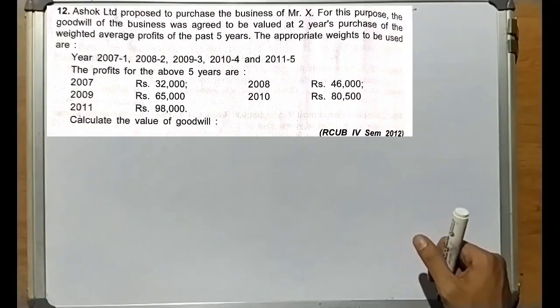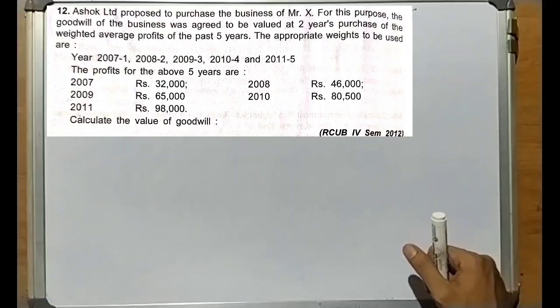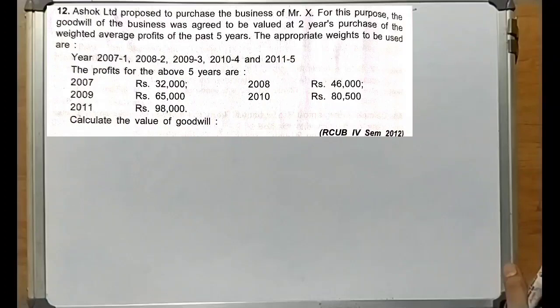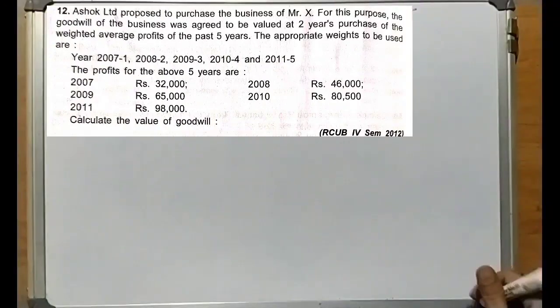The profits for the above 5 years are: 2007 = 32,000; 2008 = 46,000; 2009 = 65,000; 2010 = 80,500; 2011 = 98,000. Calculate the value of goodwill.